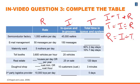For the first one — the semiconductor factory — the WIP is 45,000 wafers and the rate is 1,000 per day, so 45,000 divided by 1,000 gives us 45 days time in inventory. For the second one, similarly, it's 150 divided by 50, which gives us three days time in inventory.